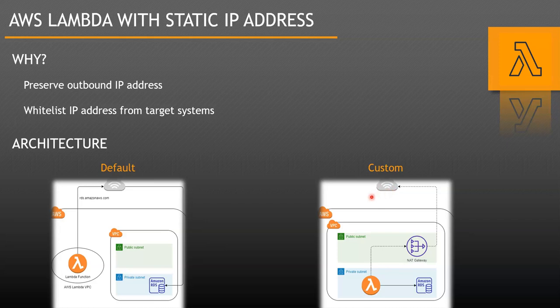This is exactly applicable when you need to access an external system. Requests from your Lambda function go to the NAT gateway first, then reach the external system. The IP address of the NAT gateway is whitelisted by the target system. Importantly, this IP address is always static because AWS associates an Elastic IP address with your NAT gateway, allowing you to reliably whitelist it from your external application.